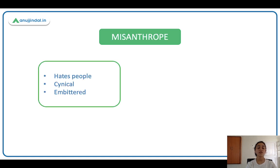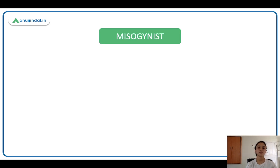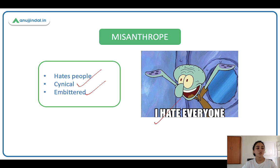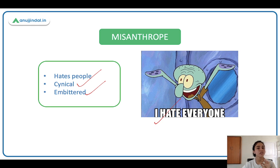Next is misanthrope. A misanthrope is someone who hates people. They have an embittered personality — they are very cynical. A cynic is someone who doesn't trust anybody and always questions people's intentions. If someone compliments or helps you, instead of thanking them, you start thinking 'why is this person being nice to me? They definitely have some evil intentions, otherwise they would not help me because people are selfish.' Such people are called misanthropes.